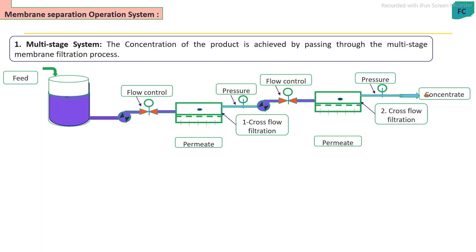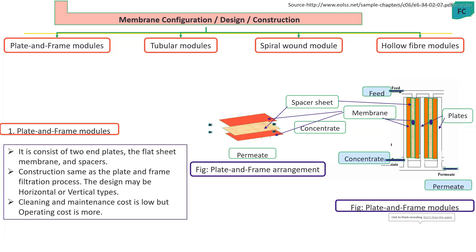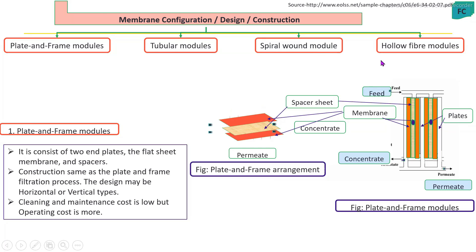The last system is the multi-stage system, where cross-flow filtration units are operated in series. After the first filtration stage, the permeate is collected separately and the concentrate is fed into the second stage. After the second filtration, a more concentrated product is obtained. By operating in series, progressively more concentrated product can be prepared. Membrane filters are available in four module designs: plate and frame, tubular, spiral wound, and hollow fiber.